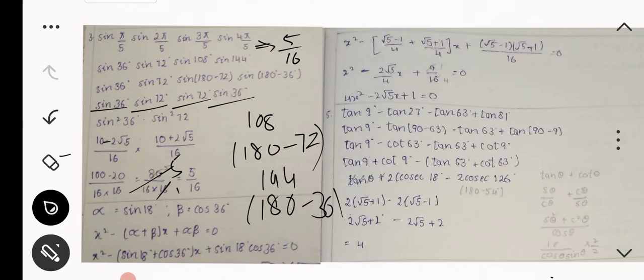Next question: find the quadratic equation whose roots are sin(18°) and cos(36°). Taking alpha = sin(18°) and beta = cos(36°), we use x² - (α+β)x + αβ = 0. After substituting the values of sin(18°) and cos(36°) and simplifying, we get 4x² - 2√5·x + 1 = 0.